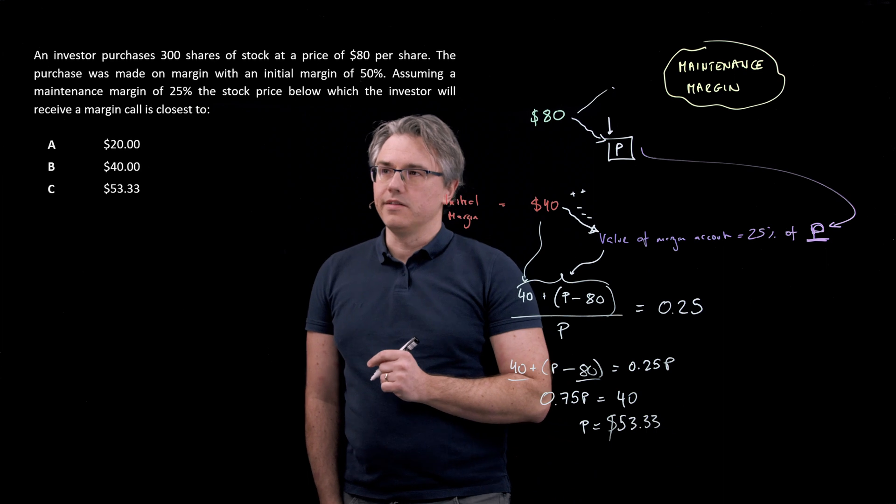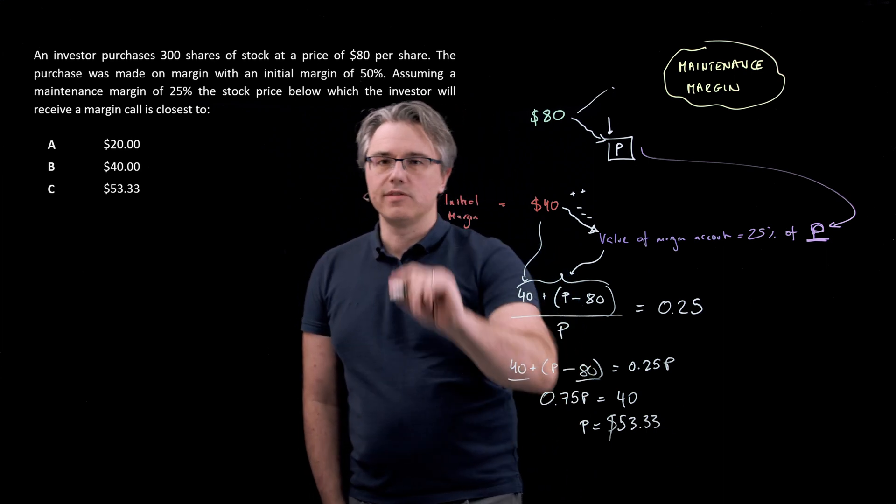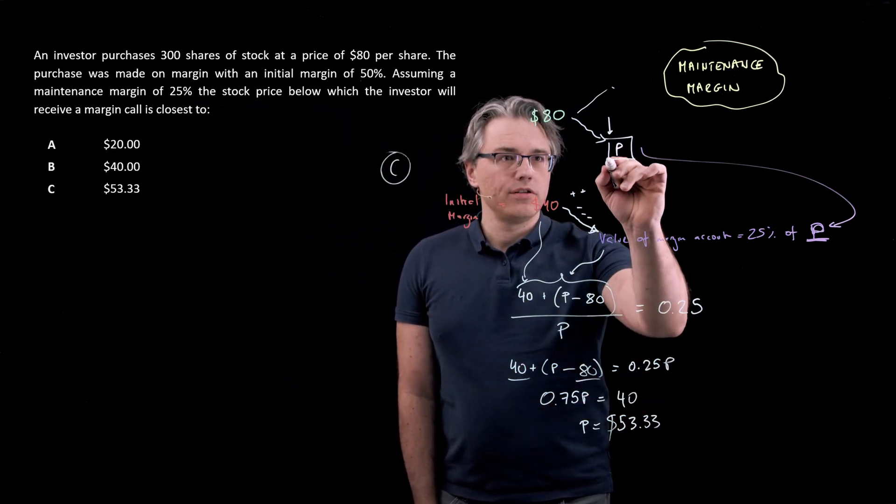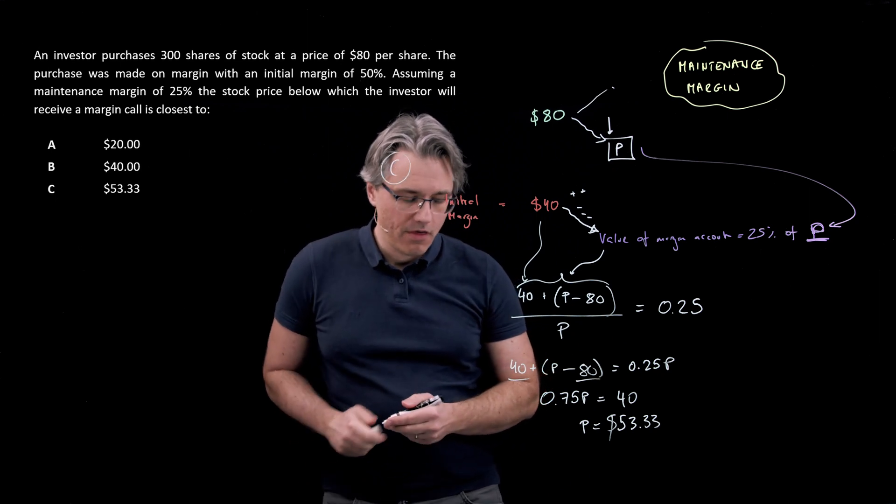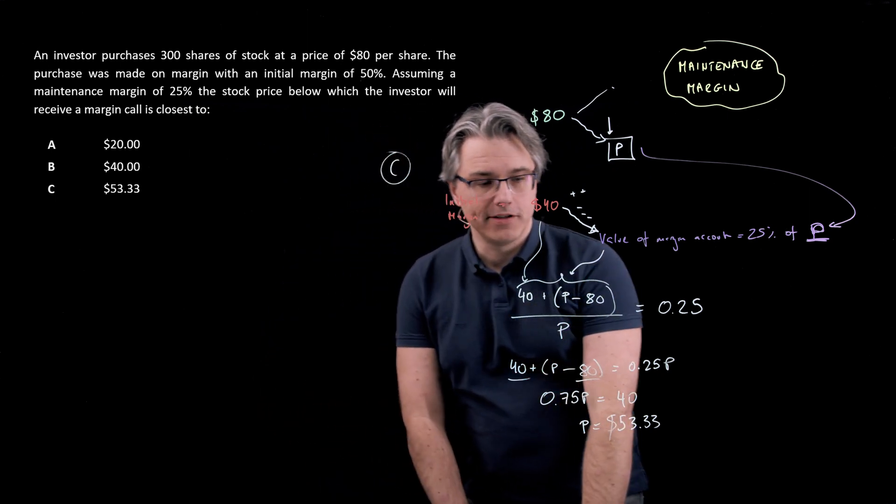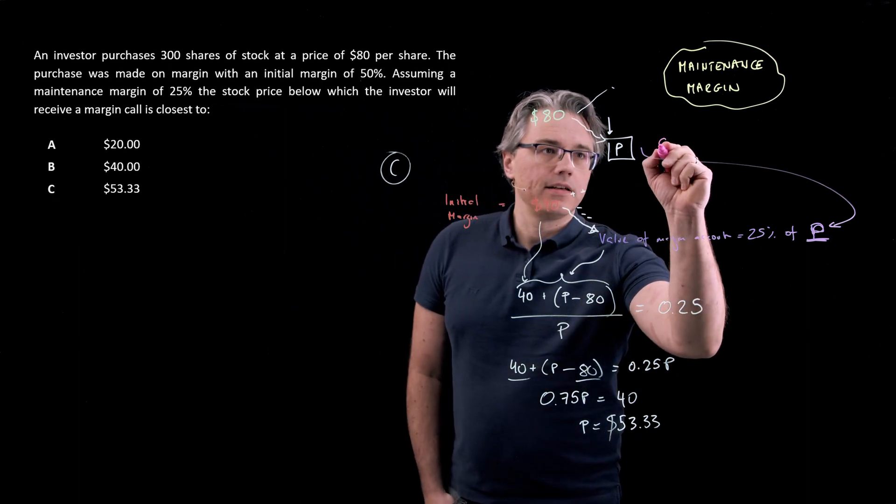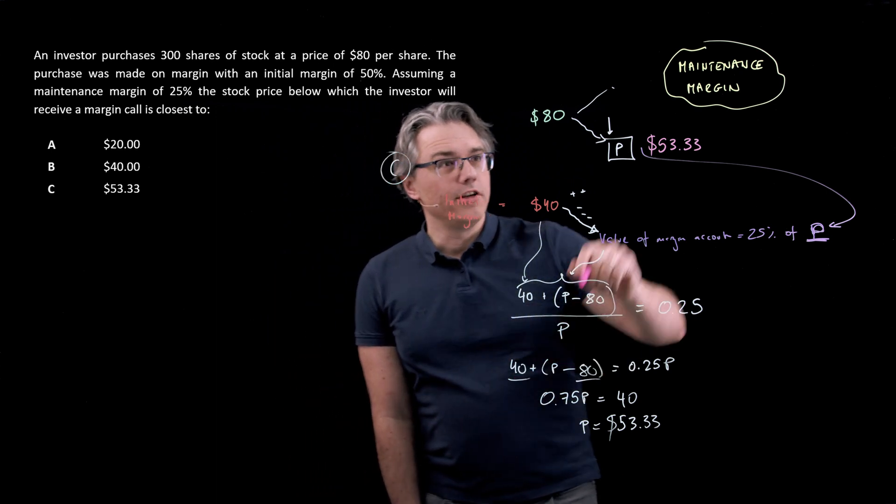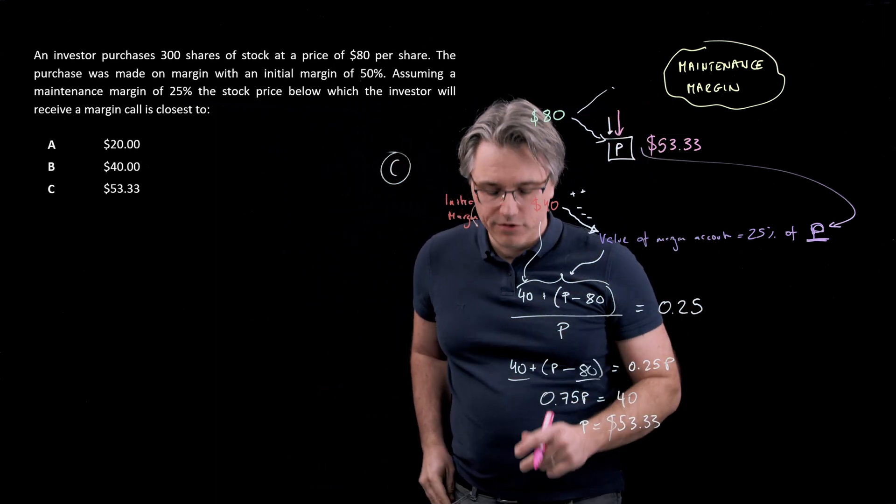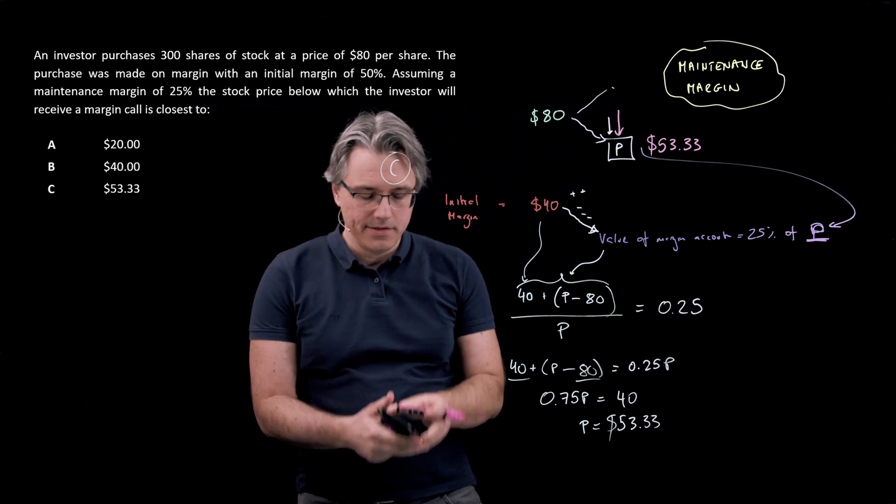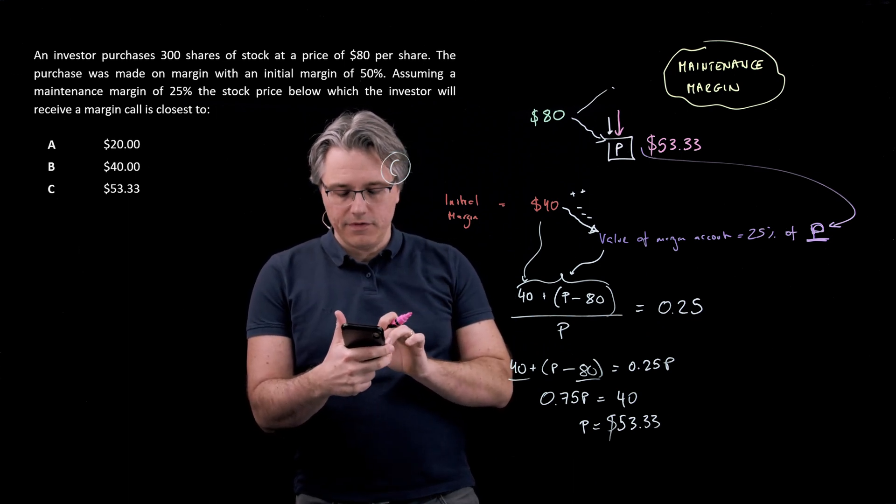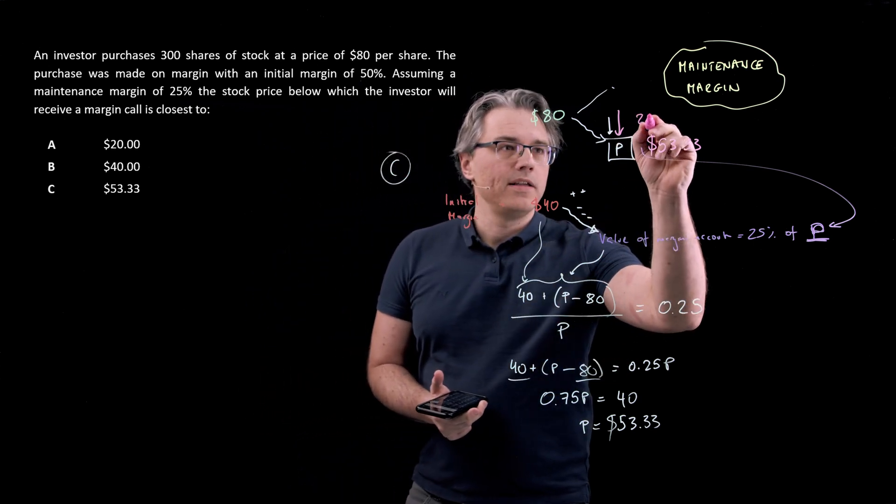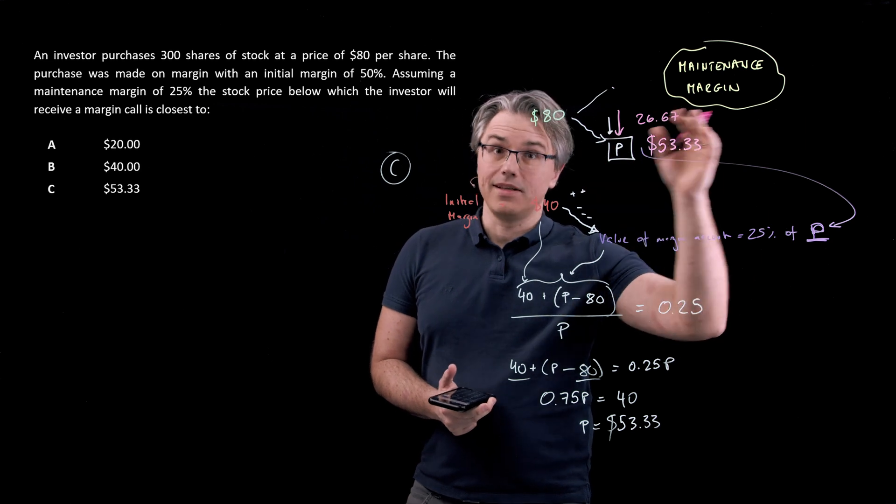And that's going to be the answer to the problem. And as you can see, this corresponds to solution C over here. When the price drops to $53.33, we can check whether this answer really satisfies the problem. So when the price drops to $53.33, what's the magnitude, what's the size of that drop from 80? Well, 80 minus 53.33, that's a drop of 26.67.